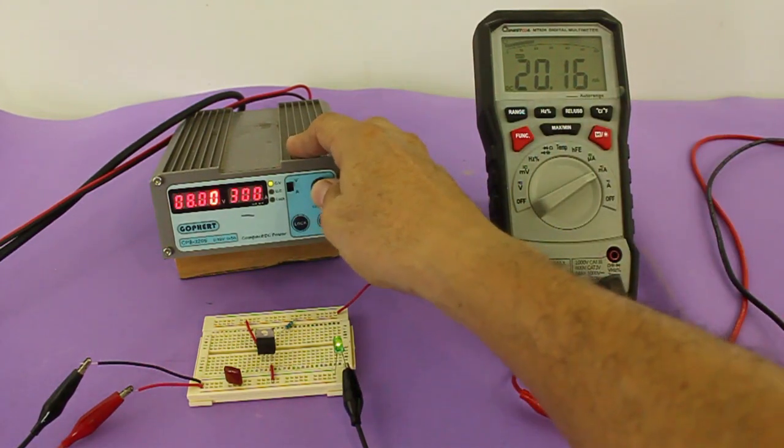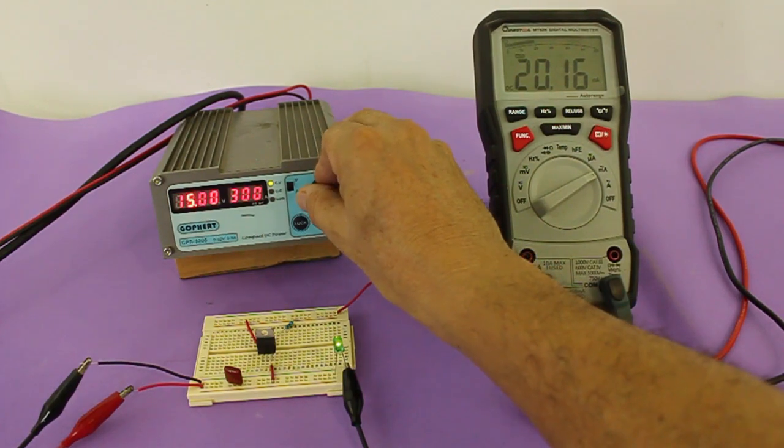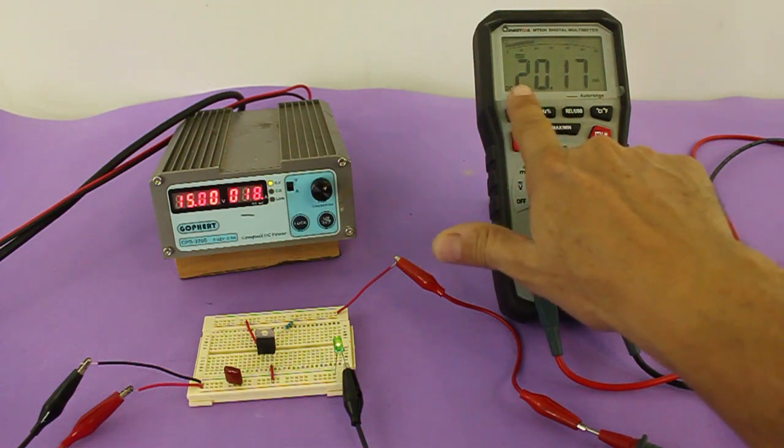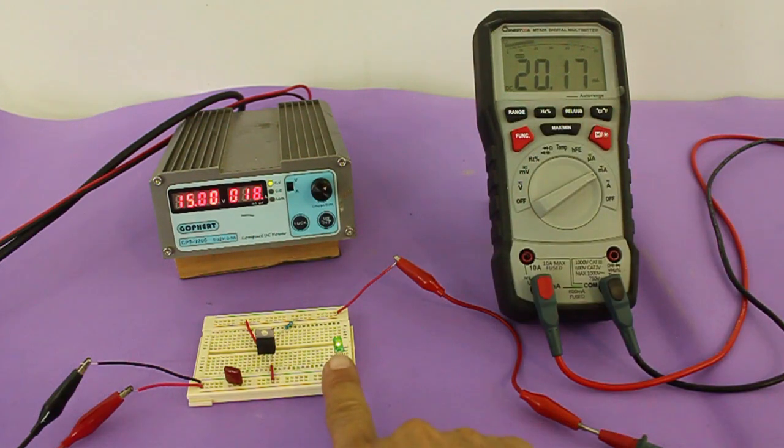I am going to use 15 volts and we still have the same current and the LED is working with its nominal current.